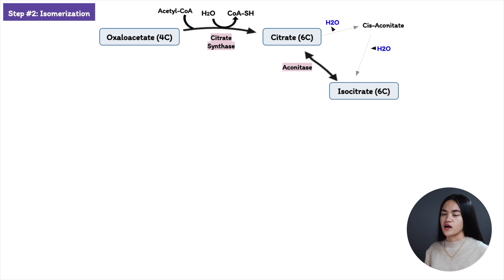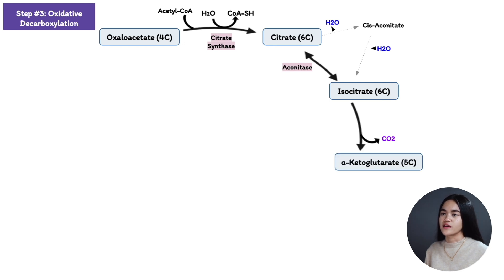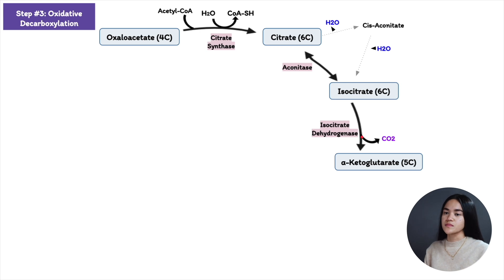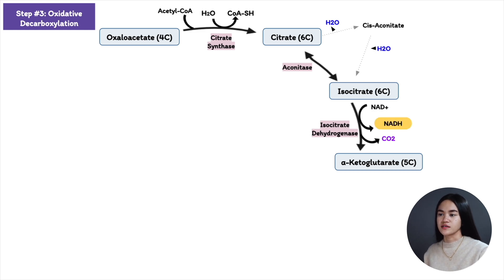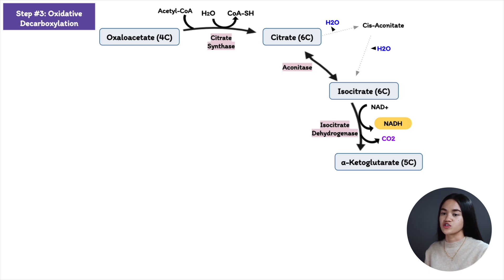In step three, isocitrate is oxidized to form alpha-ketoglutarate and carbon dioxide. Isocitrate loses one carbon in this oxidative decarboxylation — decarboxylation meaning the release of carbon dioxide. This is catalyzed by isocitrate dehydrogenase, and we produce NADH via a hydride transfer to NAD⁺ or NADP⁺, depending on the isozyme. The cytosolic isozyme is specific for NADP⁺, while the mitochondrial isozyme uses NAD⁺.